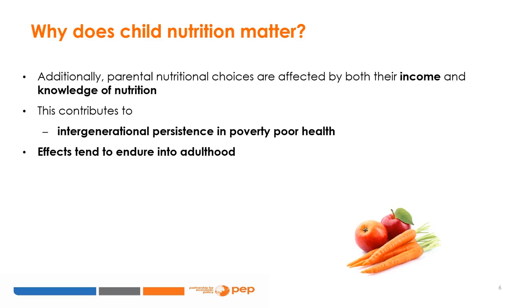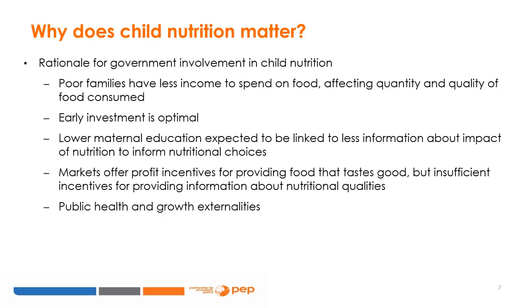The pathways for this operate via both income and information. Both parental income and parental nutritional information will affect food choices. This may inhibit nutrition and food diversity, which will affect the health, development, and growth of the child, and along this pathway contribute to an intergenerational persistence in poverty and poor health. Research has shown that these effects persist and affect labour market income. Additionally, lower maternal education is linked to having less information about nutrition, which will affect nutritional choices.